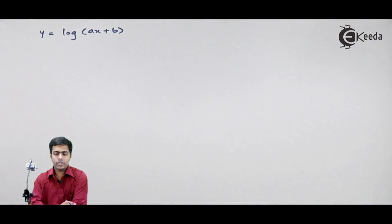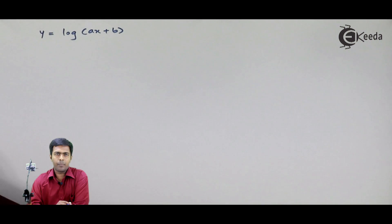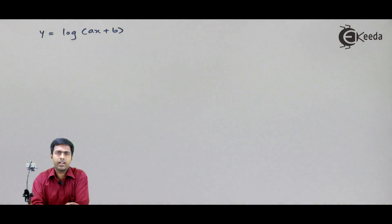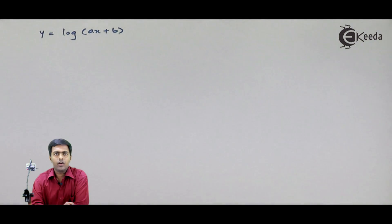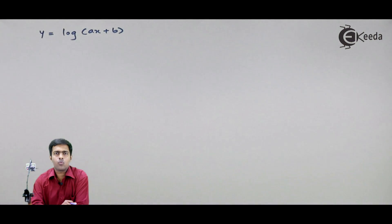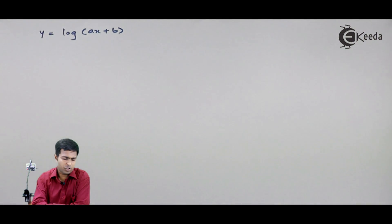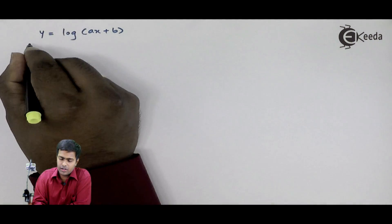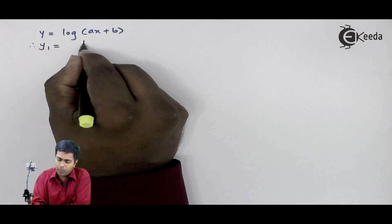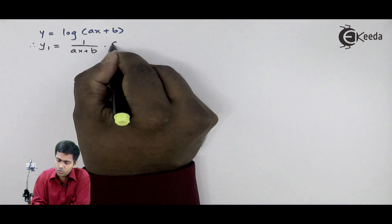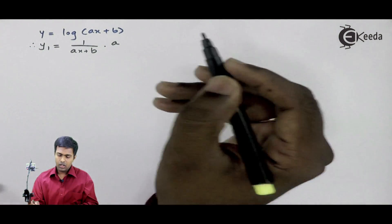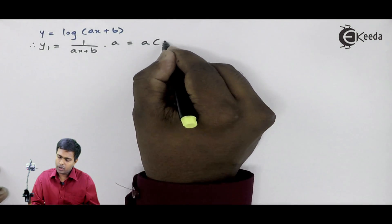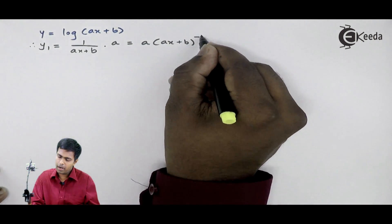To find out the nth derivative of this, we will use one approach: we will find out the first derivative y1, from y1 we will find the second derivative y2, then from y2 we will find the third derivative y3, and from the answers of y1, y2 and y3, we will predict what could be the value of yn. So let us proceed. y1 here is nothing but 1 upon (ax plus b) into a. I can rewrite this term as a into (ax plus b) raised to minus 1.